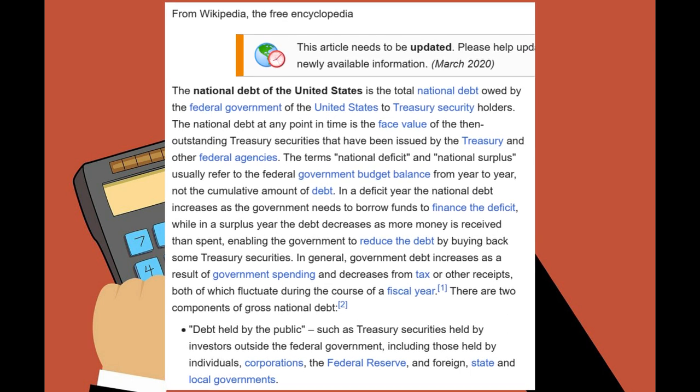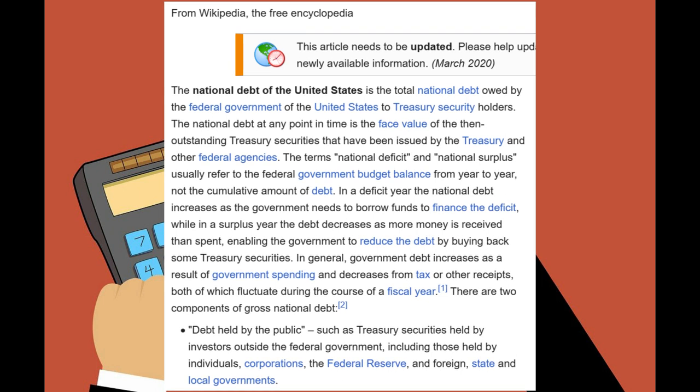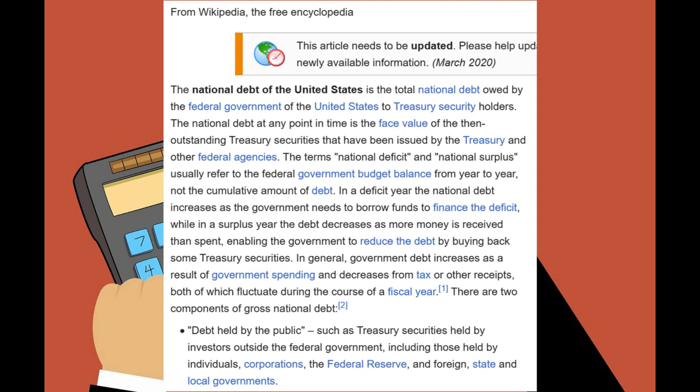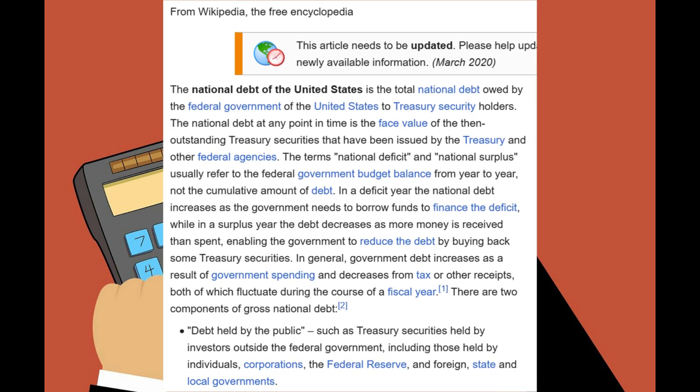In a deficit year, the national debt increases as the government needs to borrow funds to finance the deficit. While in a surplus year, the debt decreases as more money is received than spent, enabling the government to reduce debt by buying back treasury securities. General government debt increases as a result of government spending and decreases from tax or other receipts, both of which fluctuate during the fiscal year.